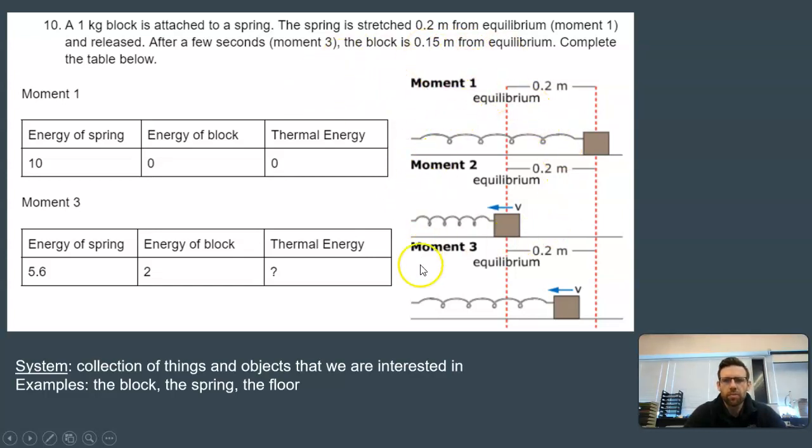This is an example of a system. When we say system, it's really just a collection of objects or things that we're interested in studying. In this case, we have a block, we have a spring, and we have the floor. Those are the three major parts of this system. We might be able to answer this question if we know a little bit about the conservation of energy. If you can answer these questions, you have a proficient understanding of conservation of energy. This would be using a model to understand conservation of energy in a system. Let's talk about how we actually answer these questions.